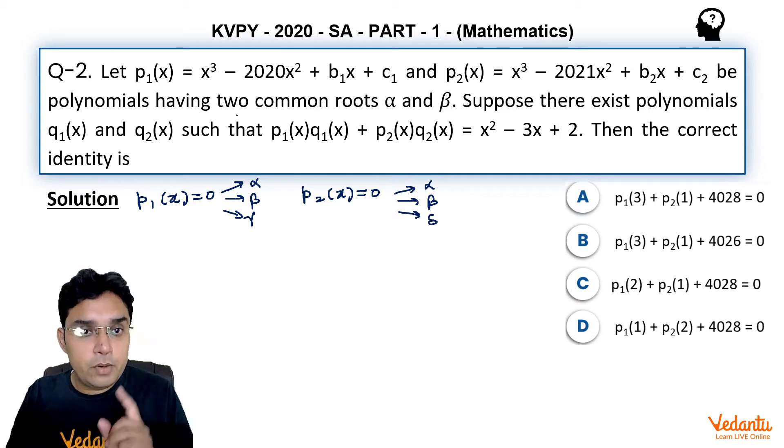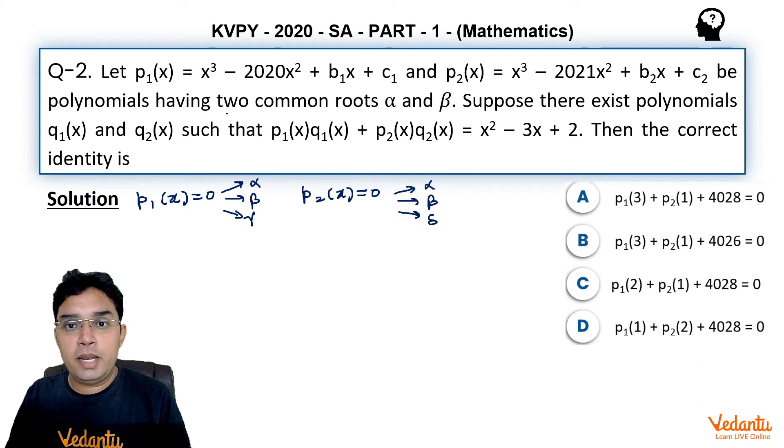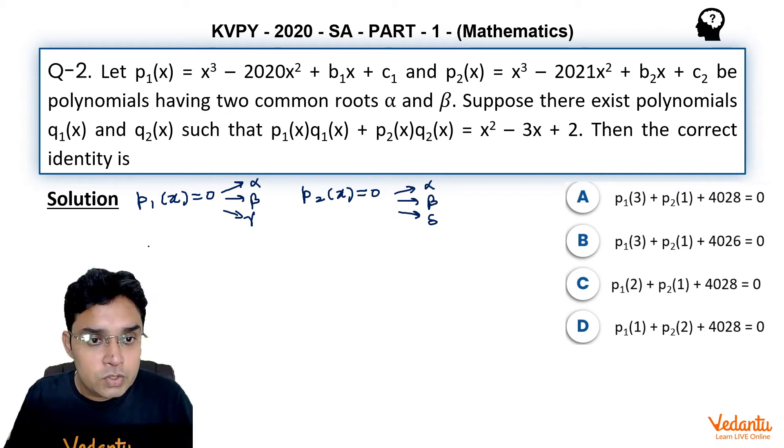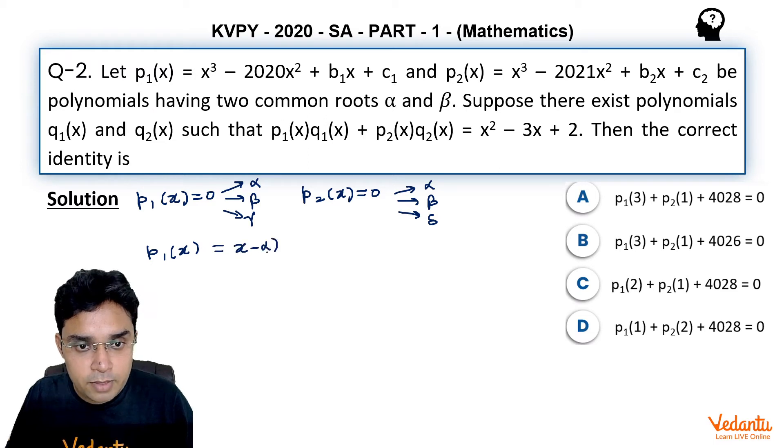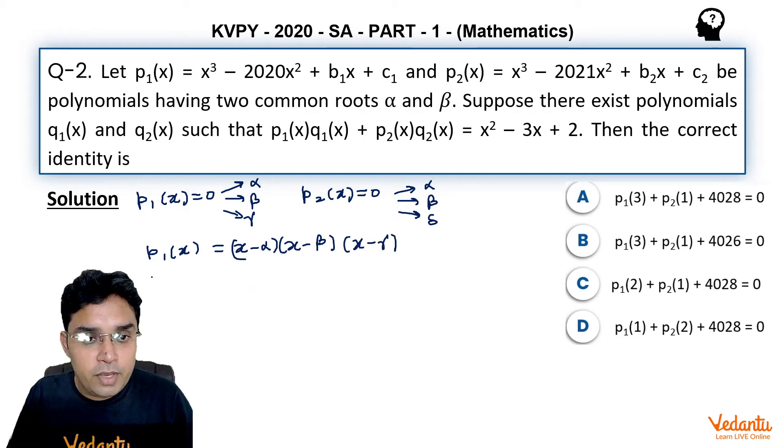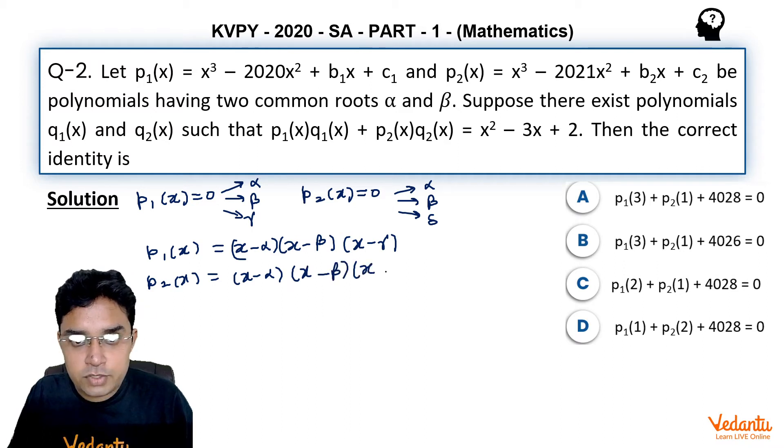That means because the leading coefficient of p₁ and p₂ both are 1, I can say p₁(x) would be equal to (x - α)(x - β)(x - γ). Similarly, we can write p₂(x) as (x - α)(x - β)(x - δ).